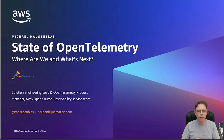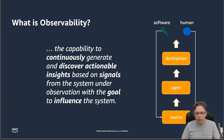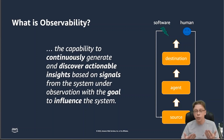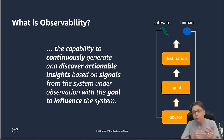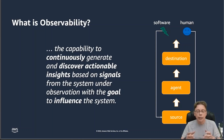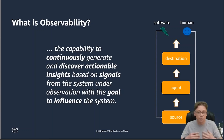Before we dive into OpenTelemetry, let us have a very quick look at what observability really is. Observability is the capability to continuously generate and discover actionable insights based on signals from the system under observation, with the goal to influence that system. We have sources — those might be compute like a Kubernetes cluster or Lambda function, a database, a data store — and those sources generate signals. We have agents, and then we have destinations, backends, where we store, graph, interact with, filter, and alert on these signals.